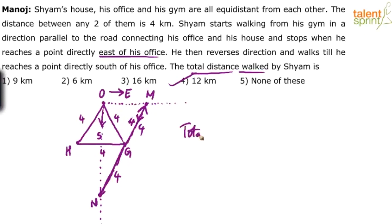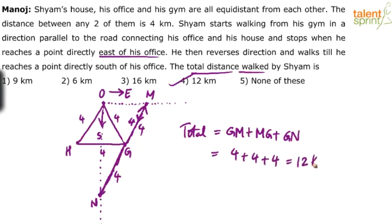Option four should be the answer. Total distance is GM + MG + GN — three fours, which is twelve. You don't have to write every step in the exam; you won't be awarded extra marks for it. Cut down the number of steps you put on paper. Draw an arrow east, an arrow south, draw an equilateral triangle — you don't need all the dotted lines. The more you write on paper, the more time it takes. The answer is 12 kilometers — option four.